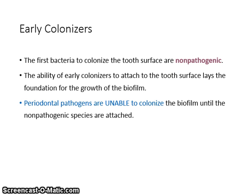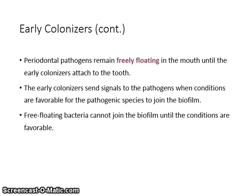The first bacteria to colonize the tooth surface are non-pathogenic. The ability of early colonizers to attach to the tooth surface lays the foundation for the growth of the biofilm. Periodontal pathogens are unable to colonize the biofilm until the non-pathogenic species are attached. Periodontal pathogens remain freely floating in the mouth until the early colonizers attach, then the early colonizers send signals to the pathogens when conditions are favorable for the pathogenic species to join.